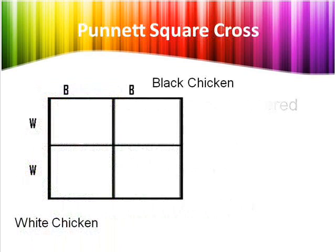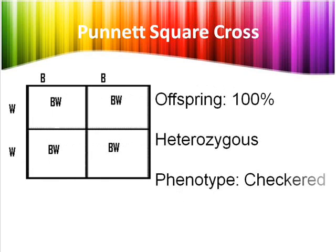How does this happen? Let's look at this Punnett square. If one of the parents was dominant homozygous — black — and the other was dominant recessive — white — the table would look like this. According to the completion of the square, the offspring would look like this.